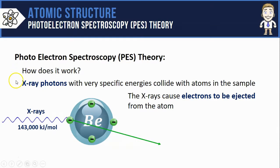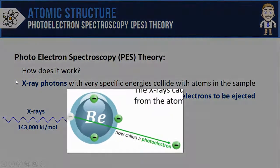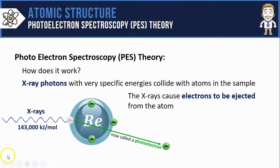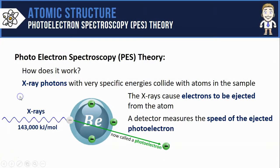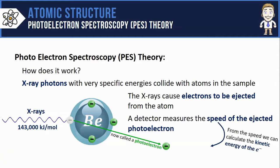Once the electron has been removed or separated from the atom it is now referred to as a photoelectron. The instrument then measures the exact speed of these ejected photoelectrons, and from that speed we can calculate the kinetic energy of the electrons themselves.